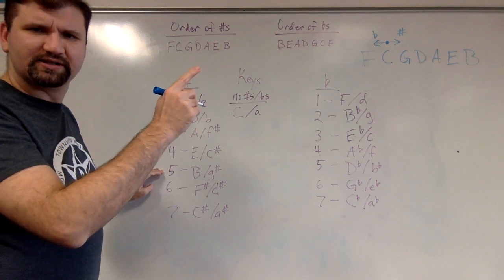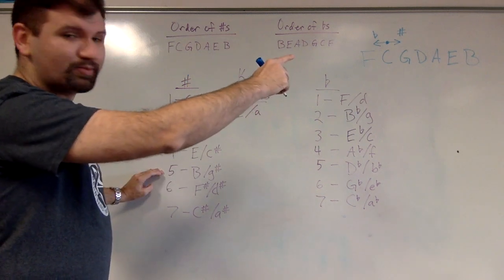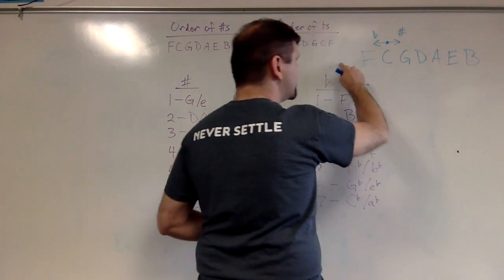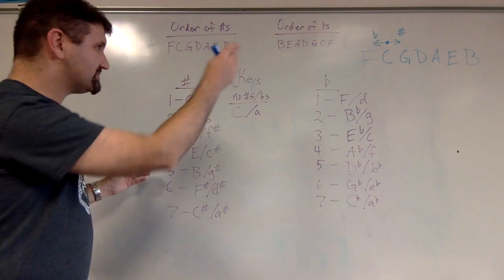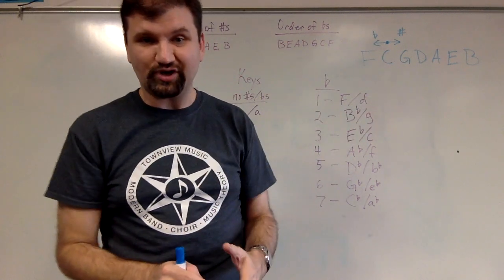And now what happened? I ran out of sharps. I ran out of keys. I'm all the way at B, but I still need more. So then I have to loop around and restart at F. But F's already been sharped at this point, so now it becomes F sharp. And then I end right where I started at C sharp.